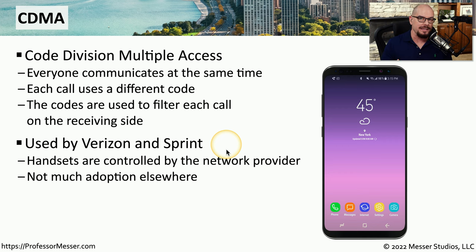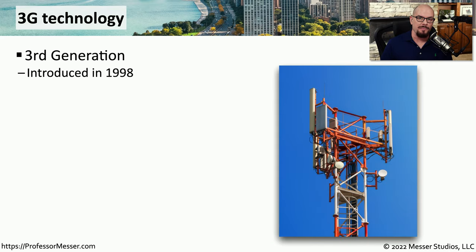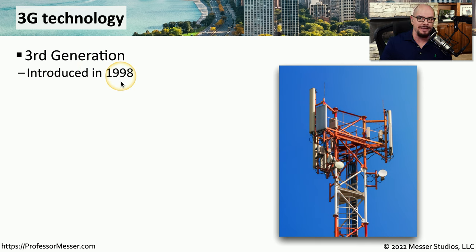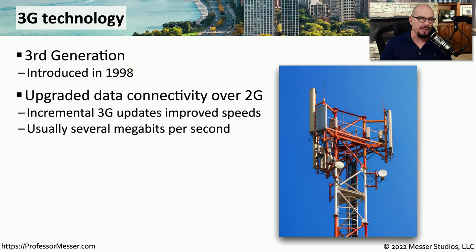Verizon and Sprint controlled exactly what handsets you were able to use on those networks. Unfortunately, CDMA wasn't popular in other parts of the world or with other providers. As more people needed additional capabilities on these mobile networks, we needed newer standards that provided additional features. One of these newer standards was the third generation, or 3G technologies, introduced in 1998. This allowed us to have much more capabilities for the data we were sending from our mobile devices, with additional speed to send more data much faster — usually several megabits per second over the best possible 3G connectivity.